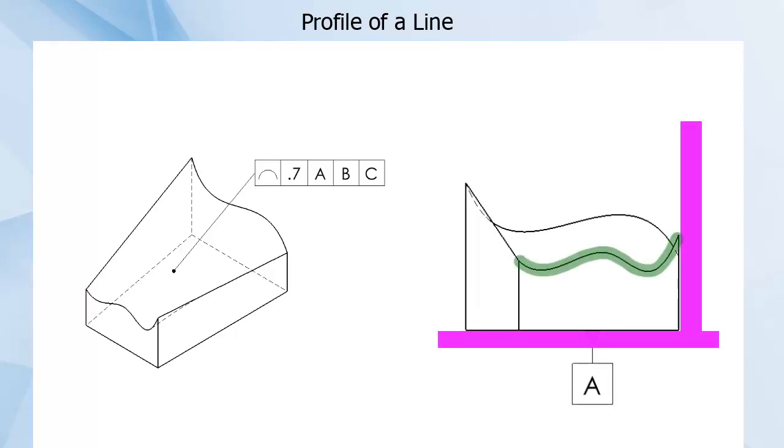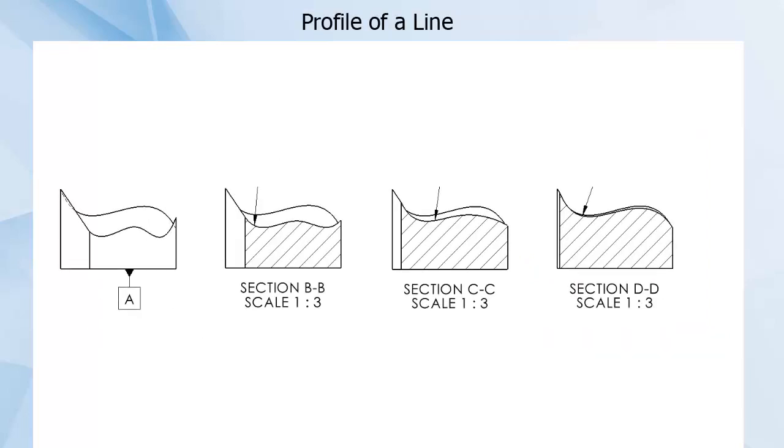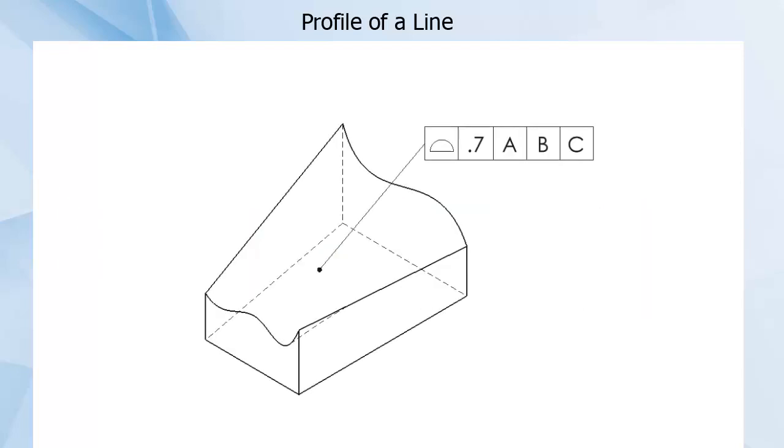locking the TZ into a specific spot. This means each independent cross-section TZ that is checked would be locked in place as well, having the same result as a full surface TZ. Thus using Profile of a Surface would make more sense.